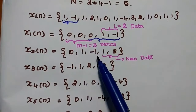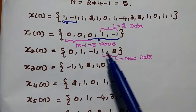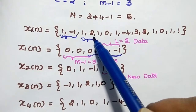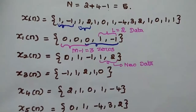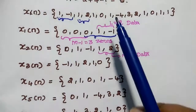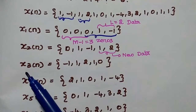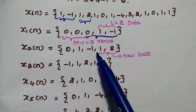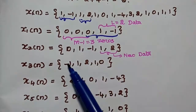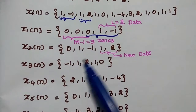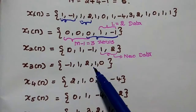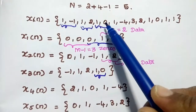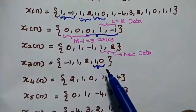So x2(n) is equal to {0, 1, -1, 1, 2}, where the last 2 values are new data from the input sequence. Next, x3(n): we take the last 3 data points from x2, which are {-1, 1, 2}, and the 2 new data values from the input sequence are {1, 0}.